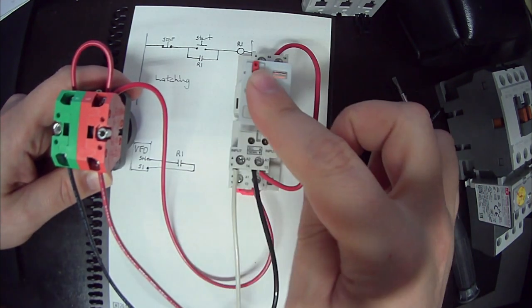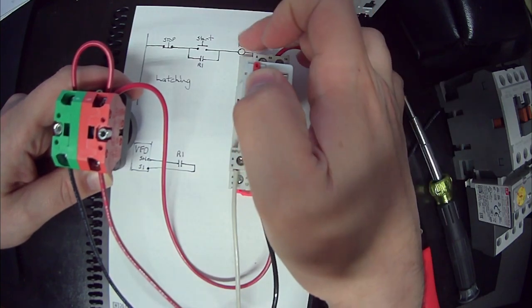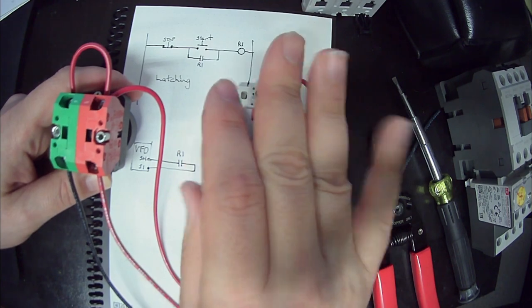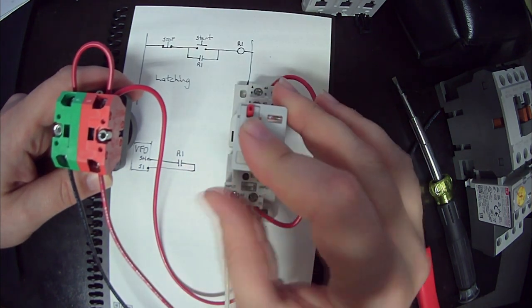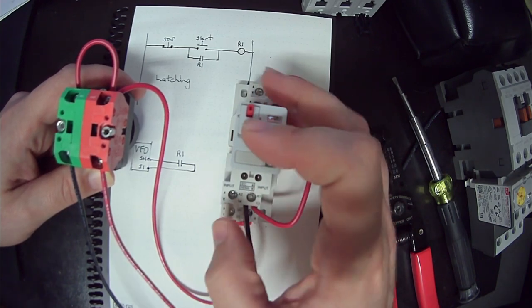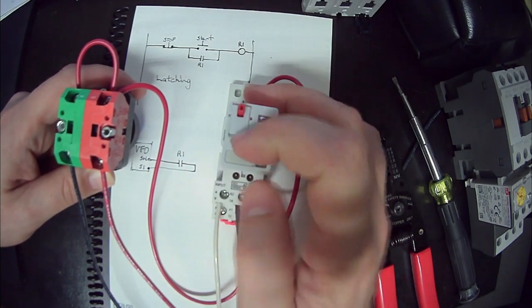And then I can use the other set of contacts, which I don't have anything wired to right now. I can use that other set of contacts for, say, like a drive, or maybe I want to have a light or something like that, and it's got its own separate voltage, whatever it is, because I have a dry contact there.